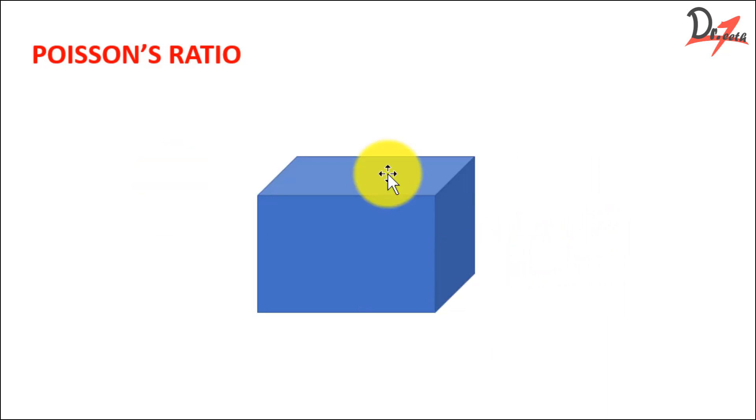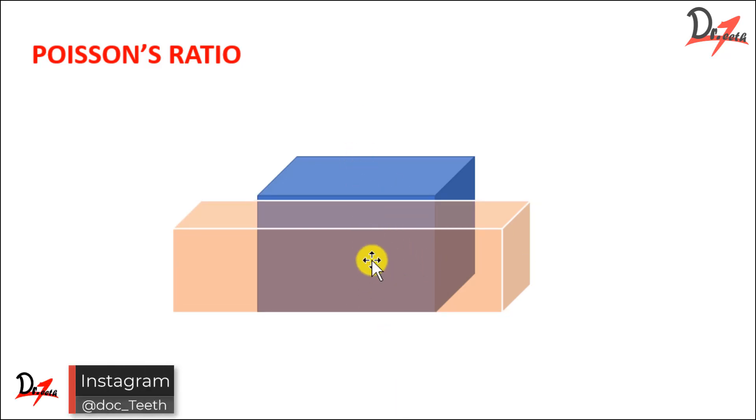Now in this example, let us suppose we are applying a tensile force. So this was our initial material. We applied a tensile force to elongate it. What will happen? The material will elongate but it will also decrease in this direction, right? It is elongating but it is decreasing in this direction.